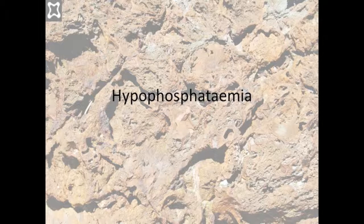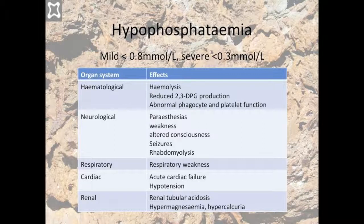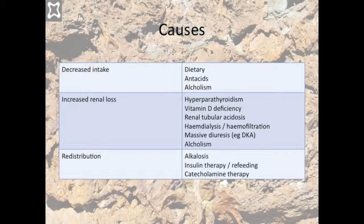Hypophosphatemia is defined as a fasting phosphate level less than 0.8 millimoles per litre. It is considered severe if levels drop below 0.3 and is associated with significant complications. The more common causes include refeeding syndrome, hemofiltration, alkalosis, insulin therapy, DKA, and catecholamine infusions.